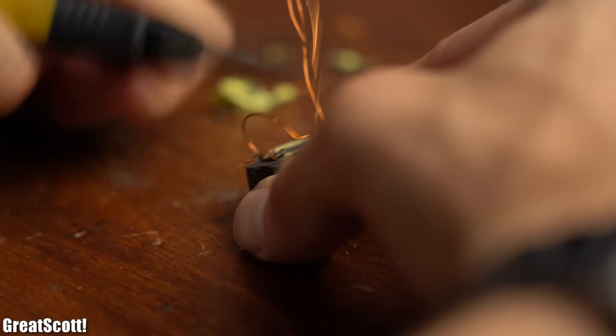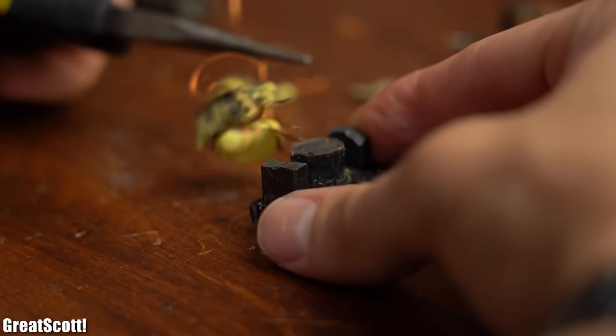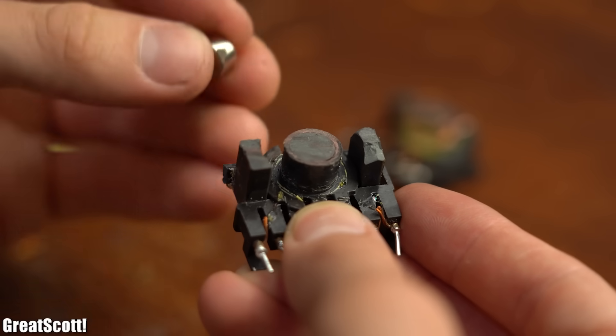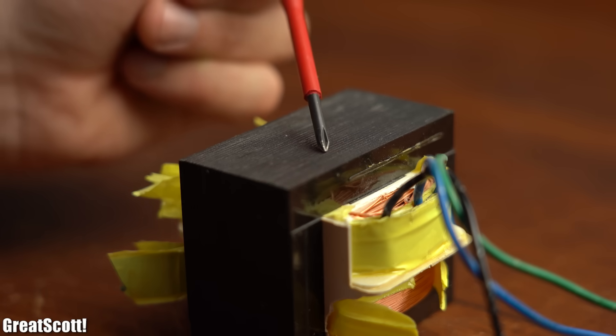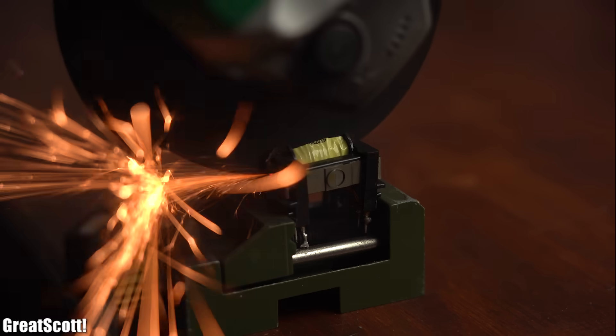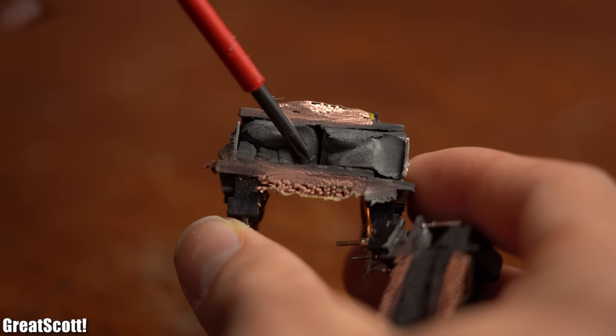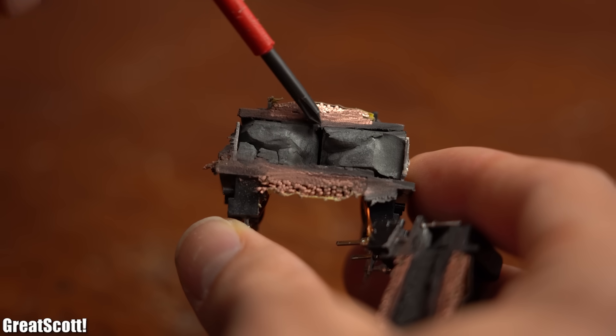Now a big difference of such a flyback transformer in comparison to a mains transformer is, for one, that its used material is a kind of ferrite, while normal mains transformers use laminated electrical sheets. The other difference is that the core comes with a small air gap which is absolutely mandatory for a flyback converter, but more about that in a minute.